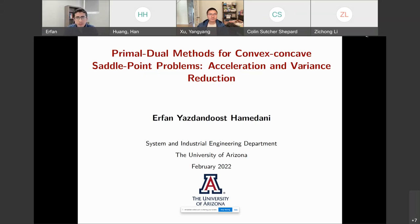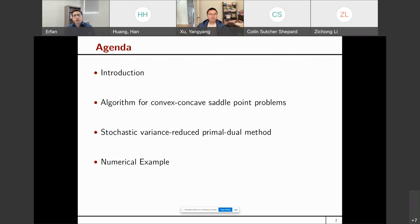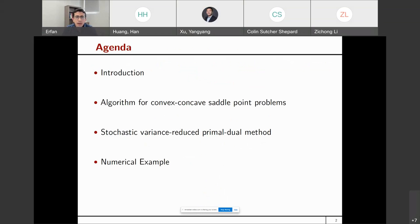Just to double check — you can see my screen, right? I'm going to talk about the variance reduction technique for saddle point problems. First I'll introduce what the saddle point problem is and give an introduction to problems arising in this area. Then I'll briefly cover an algorithm for the deterministic case, and the main focus will be on a stochastic variance-reduced primal-dual method for large-scale saddle point problems, followed by numerical experiments. Feel free to ask questions during the talk.